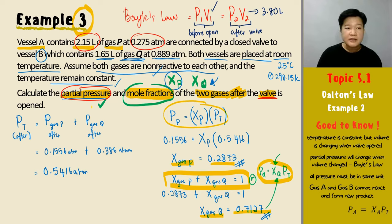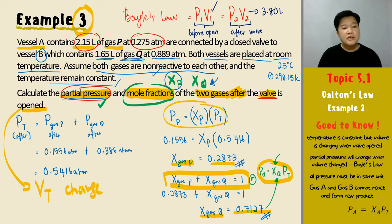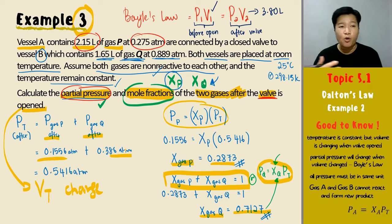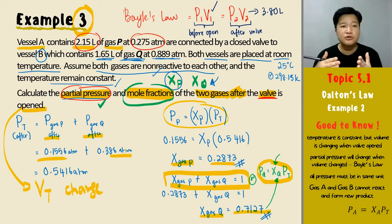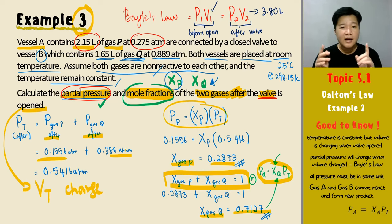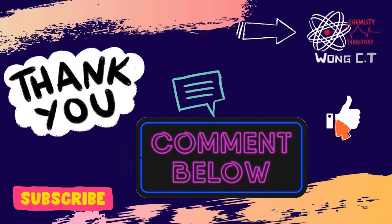To summarize: after the valve is opened, the volume changes, giving new partial pressures for each gas, from which mole fractions can be calculated. That concludes the discussion of Dalton's Law — the definition, formula, conditions, and three different example types. Make sure you understand not just how to use the formulas, but what Dalton's Law is telling you. If you have any questions, drop them in the comments. Remember to like the video, subscribe, and see you in the next video.